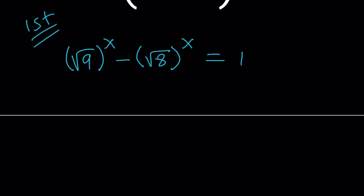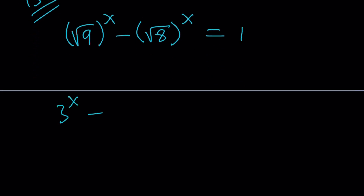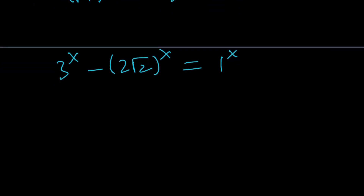Starting with 3 to the power x minus 2 root 2 to the power x equals 1. The highest base here is 3 — we have three bases: 3, 2 root 2, and 1. When the 1 is not raised to any power, you could assume it's 1 to the power x, just for consistency. We can basically divide everything by 3 to the power x.